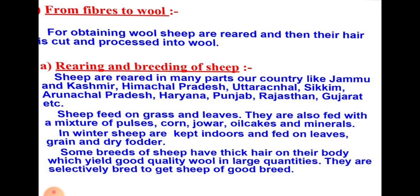One important term is selective breeding. The process of selecting parent sheep for obtaining special characteristics in their offspring — such as soft under-hair — is called selective breeding. Parent sheep are specially chosen so as to give birth to sheep which have only soft under-hair. This process of selecting parent sheep for obtaining special characteristics in their offspring is called selective breeding.